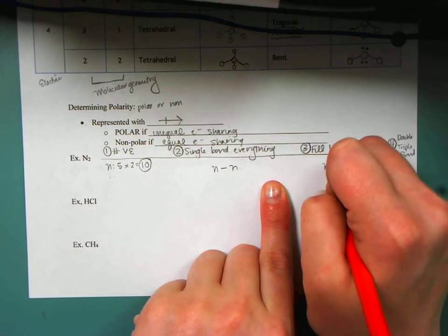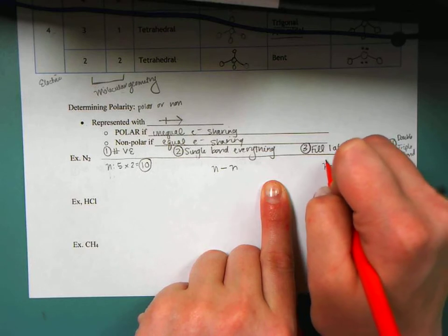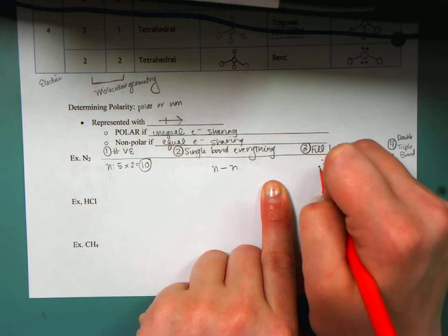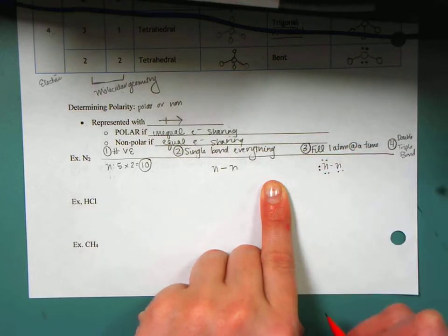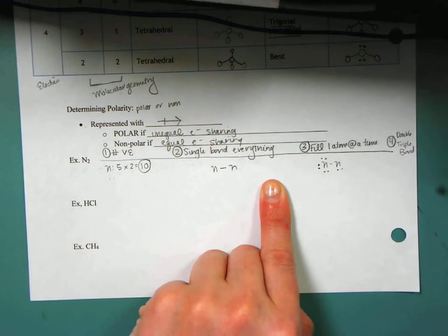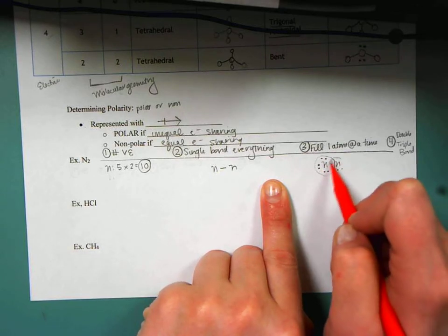Next, I'm going to go through and fill up one atom at a time. So I've got N, two electrons there, four, six, eight, and ten. I'm out of electrons now, and I notice that this nitrogen has eight, and this nitrogen has four.